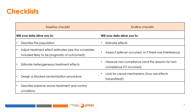The following is an EAGP checklist of what the baseline and endline surveys will allow us to do. The baseline survey must: one, describe the population; two, adjust treatment effect estimates — specifically, are the questions asked predictive of the outcomes; three, help estimate heterogeneous treatment effects; four, design a blocked randomization procedure; and five, describe the balance across treatment and control conditions.